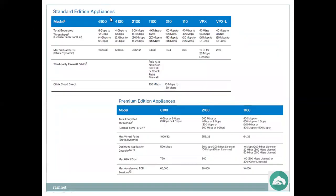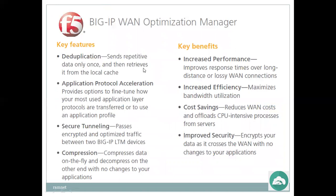These are the standard edition and premium edition appliances Citrix is offering — different model numbers, speeds, and firewall add-on options. Now, BIG-IP from F5 — key features of F5 as a WAN optimizer: deduplication, application protocol acceleration, secure tunneling, and compression. Deduplication means sending repetitive data only once and retrieving it from local cache.